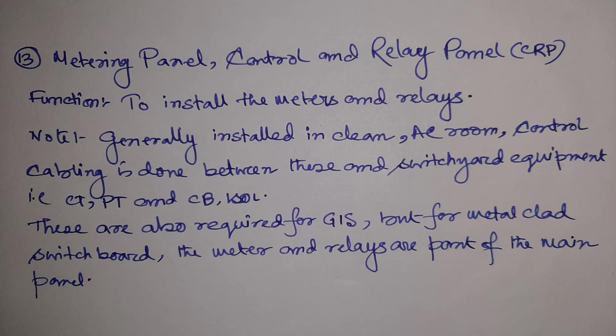The CRP takes input from CTs and PTs and gives output to the circuit breaker. Interlocks between circuit breakers and isolators are also done through the CRP. These panels are required for both switchyard and GIS substations. However, for normal metal-clad indoor switchboards, separate CRP panels are not required because the power circuit and control and metering relay circuits are housed in a single panel in that case.